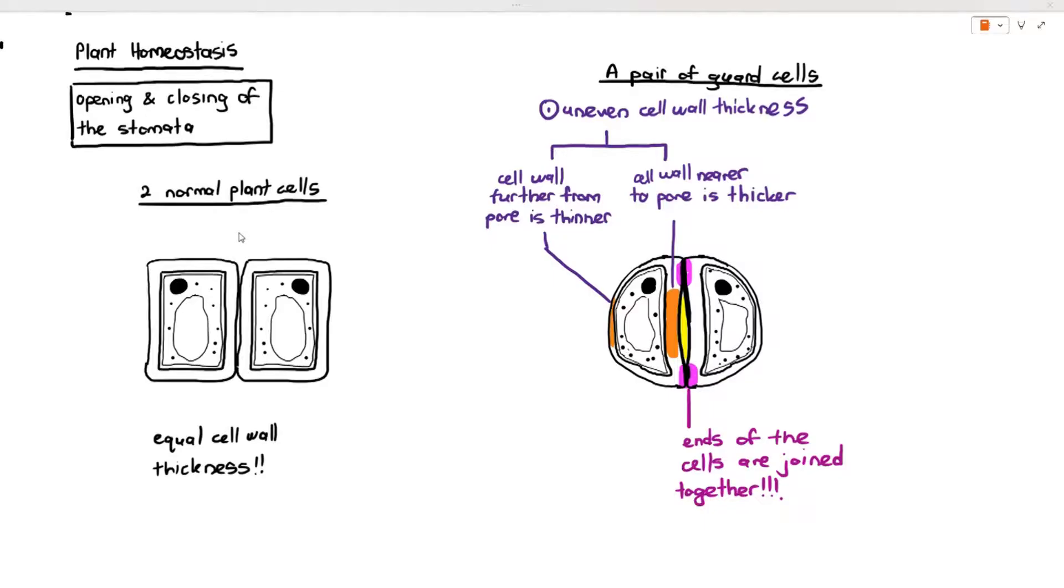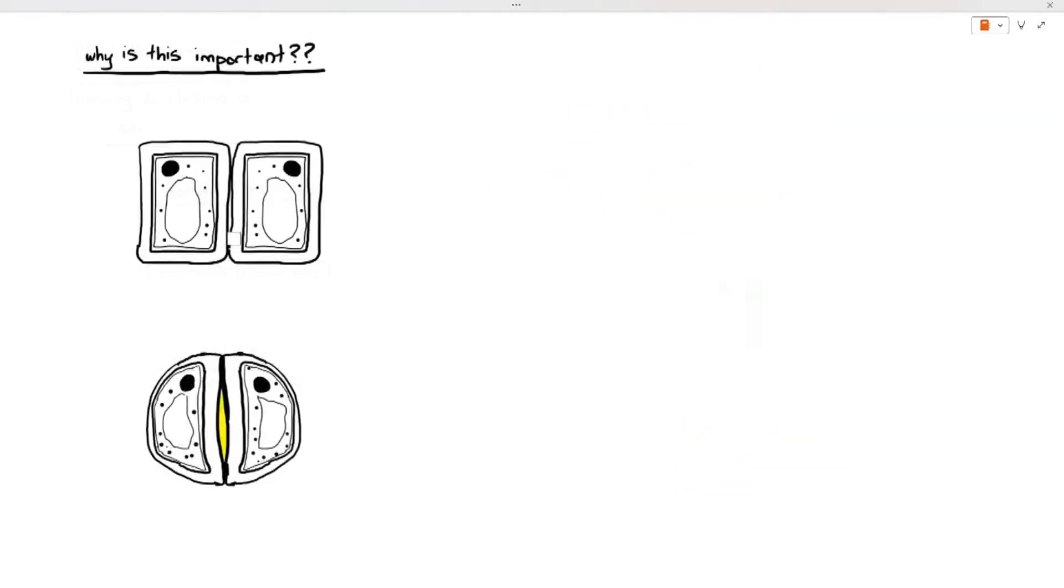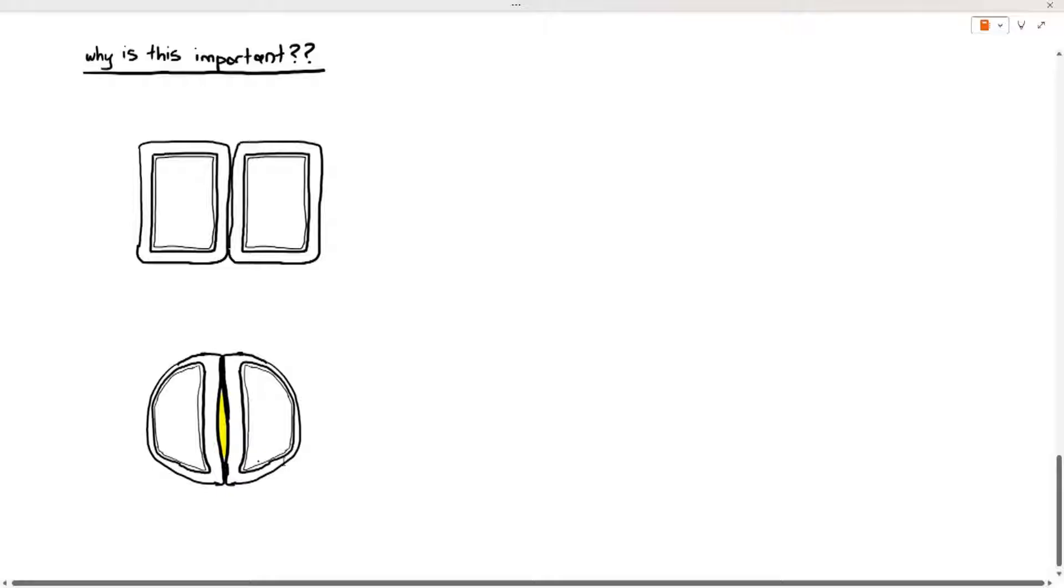So why is this very important? Why am I going on about thickness of cell walls and the cell walls being joined together at the end? The reason is, let's look at the guard cells and the two normal plant cells. Now I've removed the nucleus and the cytoplasm and the vacuole so that we can see more clearly, but of course those organelles are present, we are just not including them because it makes it easier for us to visualize the cells.